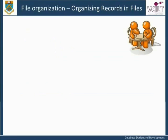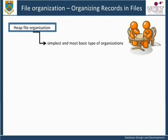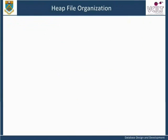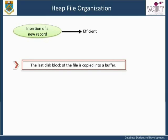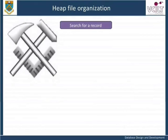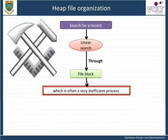Heap file organization is the simplest and most basic type of file organization. Records are stored in the file in the order in which they are inserted, and new records are always placed at the end of the file. Insertion of a new record is very efficient: the last disk block of the file is copied into a buffer, the new record is added, and the block is rewritten back to the disk. The address of the last file block can always be kept in the file header. The search for a record based on a search condition involves a linear search through the file block by block, which is often a very inefficient process.